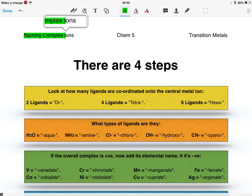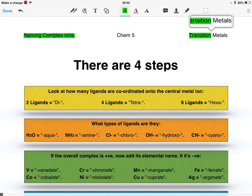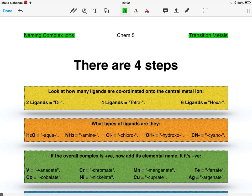Now I'm on to naming the complex ions as part of the transition metals. So there's four steps to do this.